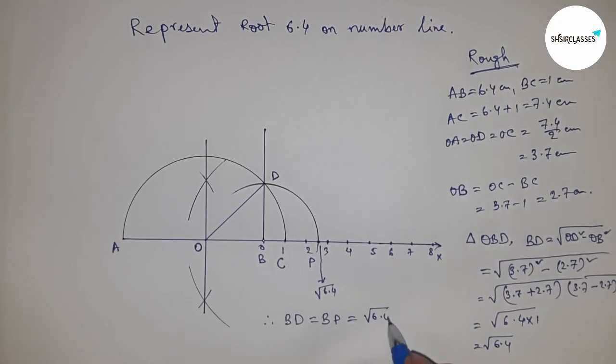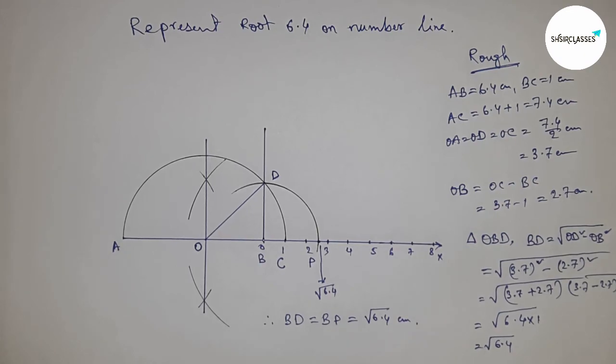Therefore, BD equals BP equals root 6.4 centimeters. That's all. Thanks for watching. Please subscribe, like, and comment on my video. Thanks for watching.